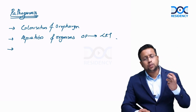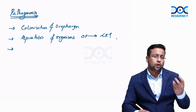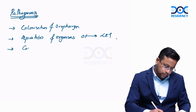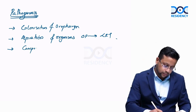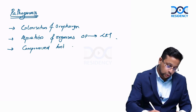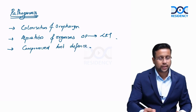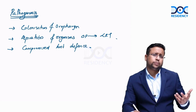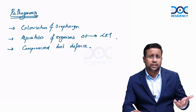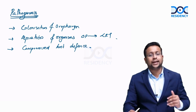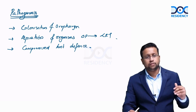Third, there should be a compromise of the normal host defense mechanisms — compromised host defense — which usually all these patients will have. They will be on various kinds of immunosuppressive drugs, and anyone in hospital who has developed VAP will have defense mechanisms that are definitely low.